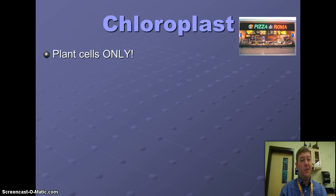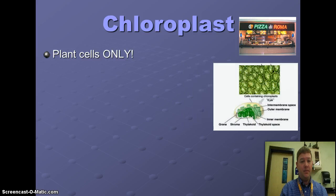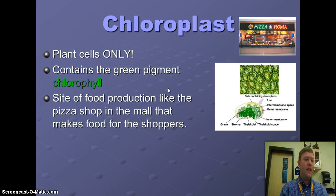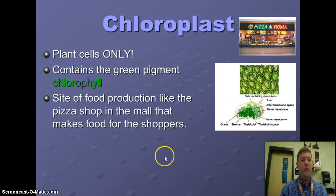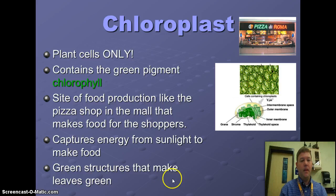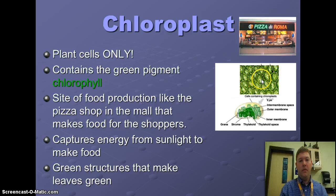Chloroplasts — first of all, chloroplasts are only going to be found in plant cells. They contain the green pigment chlorophyll. It's the site of food production, just like a pizza shop in the mall that makes food for all the shoppers. The chloroplasts are making food for that plant by capturing energy from sunlight and turning it into food. The green structures you see in plant cells — that chlorophyll is what makes the plant green.